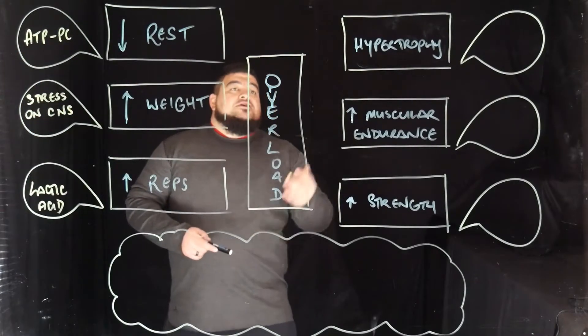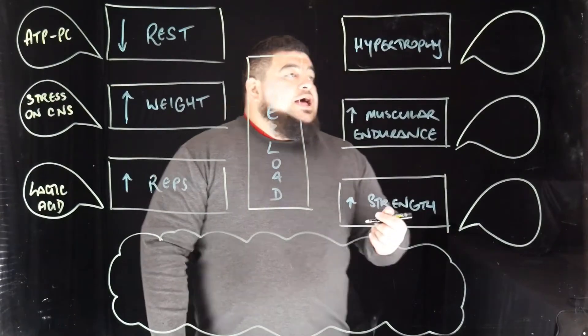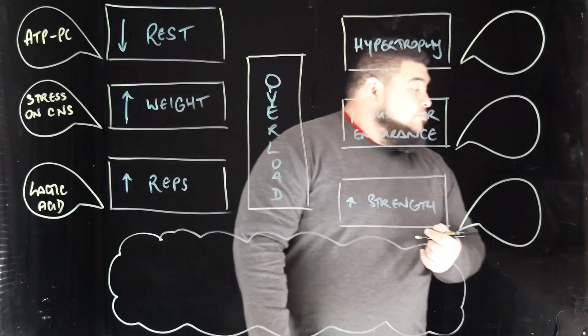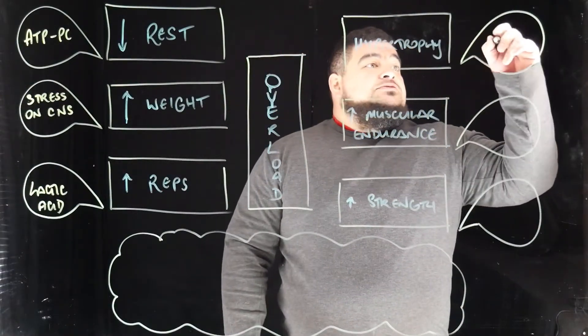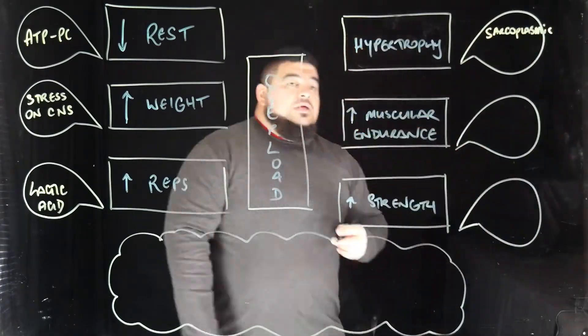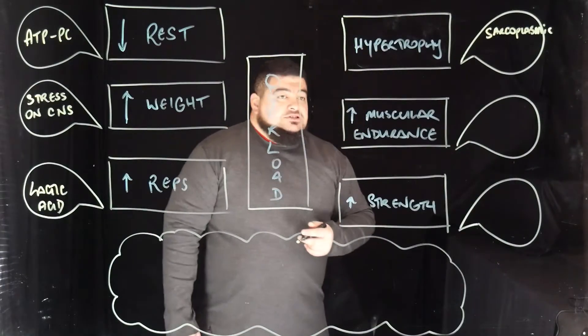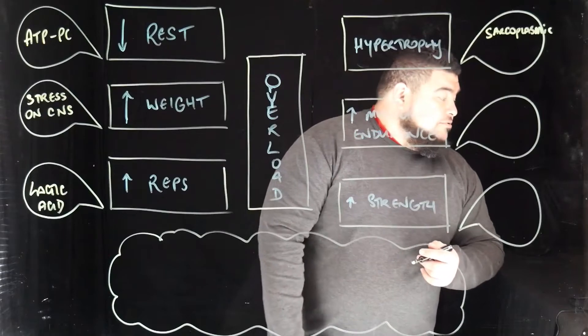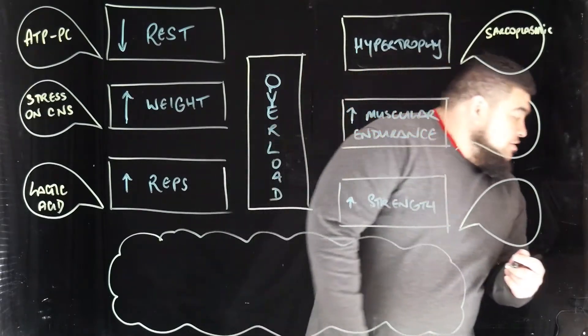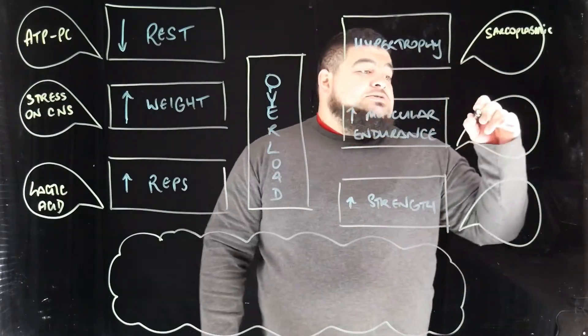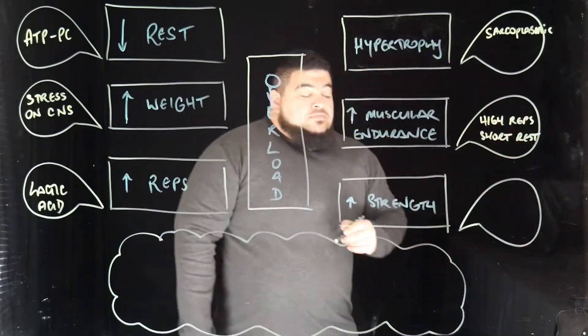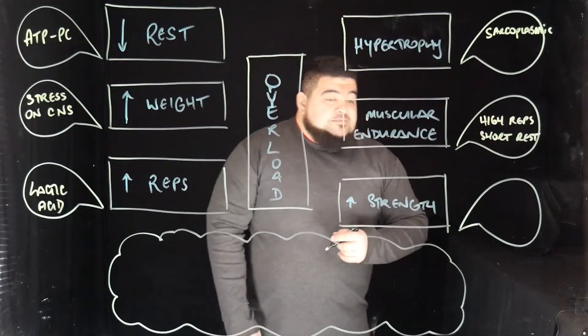So why does hypertrophy occur? That is because of sarcoplasmic hypertrophy. Why does muscular endurance increase? This is because of high reps. And muscular strength occurs because of the central nervous system. So now we've filled out our hot map and we need to come up with an overall generalization.